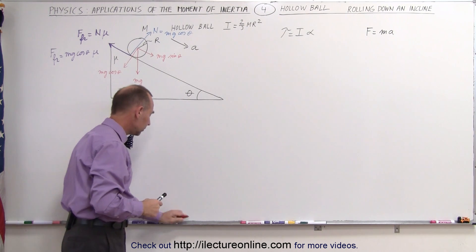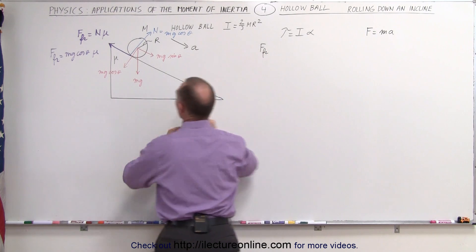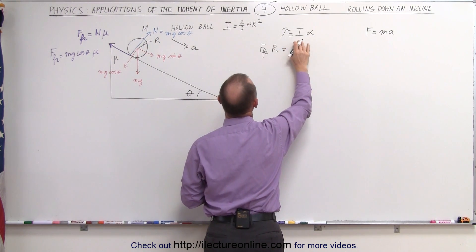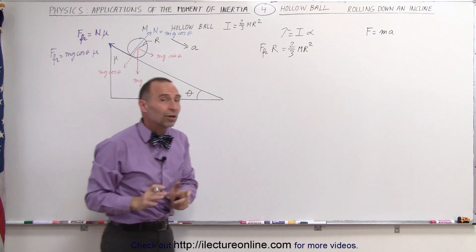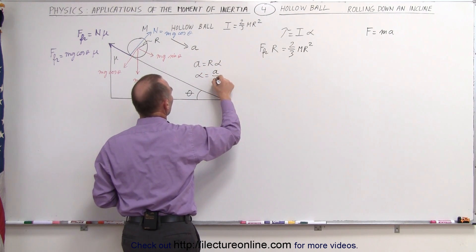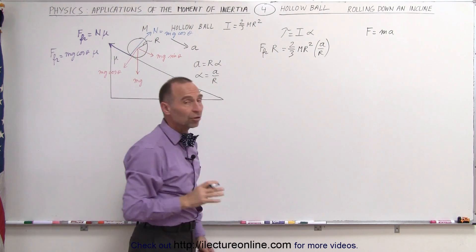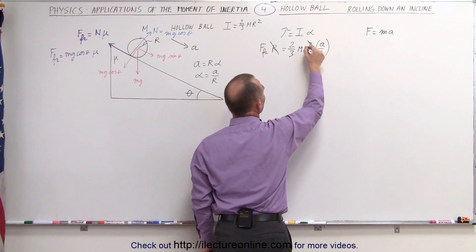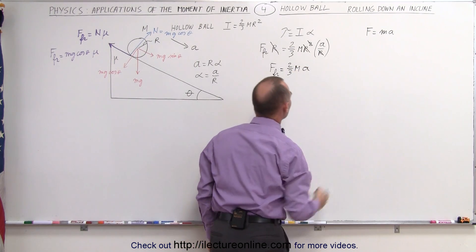Plugging that into the torque equation, torque equals the friction force times the perpendicular distance from the line of action to the center of the ball, which is the radius. That equals the moment of inertia of the hollow ball — two-thirds mass times r squared — times alpha. Since a equals r times alpha, alpha equals a divided by r. Substituting for alpha, we can simplify: the r on the left cancels with one r from r squared on the right, leaving friction force equals two-thirds mass times acceleration.